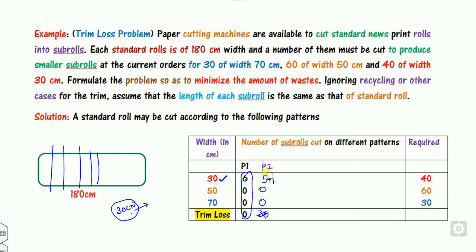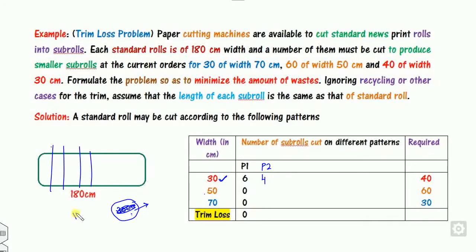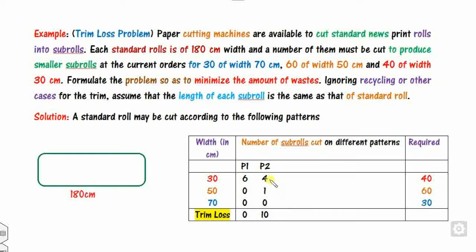If we construct four 30 cm pieces, that uses 120 cm, leaving 60 cm. From those 60 cm we can cut one 50 cm piece, leaving 10 cm. We cannot construct 70, 50, or 30 cm from 10 cm, so 10 cm is trim loss waste. This gives cutting pattern (4, 1, 0) with wastage of 10 cm.